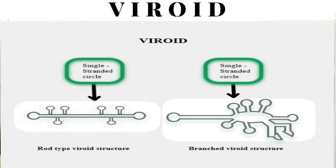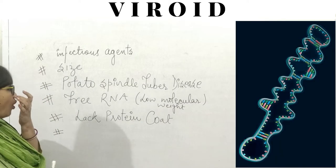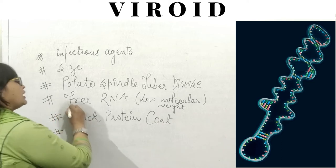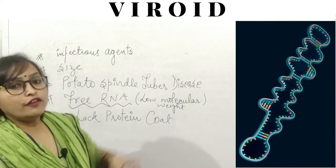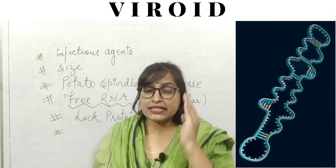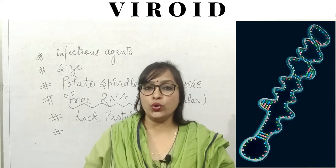It lacked the protein coat that is found in viruses. These are only free RNA of low molecular weight. The RNA of the viroids was of low molecular weight and they lack a protein coat. They are simply free RNA that act as very infectious agents, and their size is even smaller than viruses.